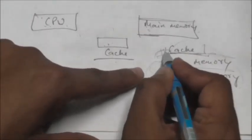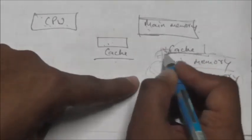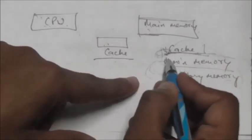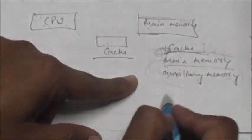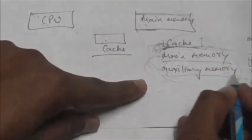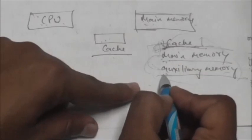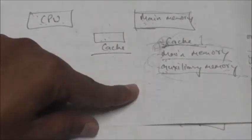Cache memory is very expensive. It is the most expensive among all these memories, and auxiliary memory is the cheapest memory among all these memories.